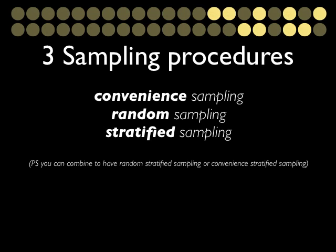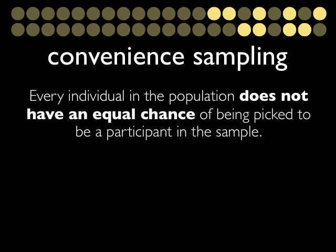The first sampling procedure is convenience sampling. For example, if you're interested in surveying a sample of year 12 students, you might just choose whoever happens to be in the study hall at the time you're doing the research. The problem with convenience sampling is that every individual in the population does not have an equal chance of being picked as a participant.